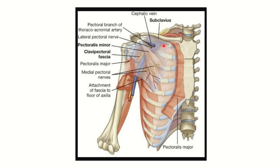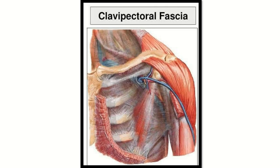Here we can see the wall of the breast tissue is removed and the pectoralis major muscle is also removed, and here we can see a fascial structure that covers the axilla. This fascial structure is the clavipectoral fascia. This whitish structure visible here is the clavipectoral fascia. To reach the axilla, we have to cut this fascial structure to gain access to the axillary area.